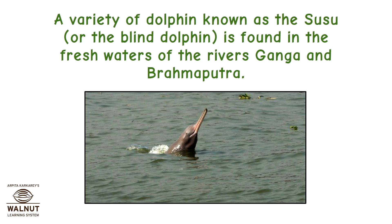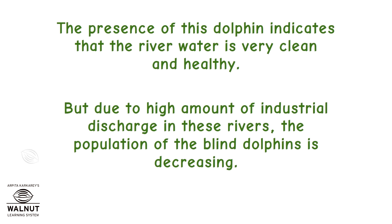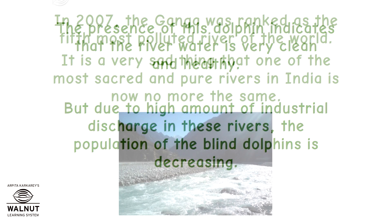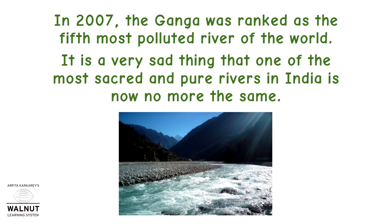A variety of dolphin known as the susu or the blind dolphin is found in the fresh waters of the rivers Ganga and Brahmaputra. The presence of this dolphin indicates that the river water is very clean and healthy. But due to the high amount of industrial discharge in these rivers, the population of blind dolphins is decreasing. In 2007, the Ganga was ranked as the fifth most polluted river of the world. It is very sad that one of the most sacred and pure rivers in India is now no more the same.